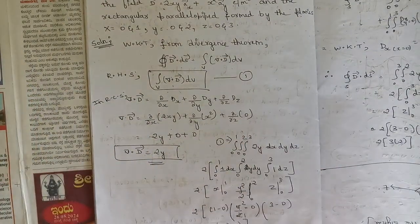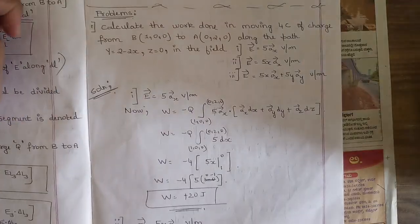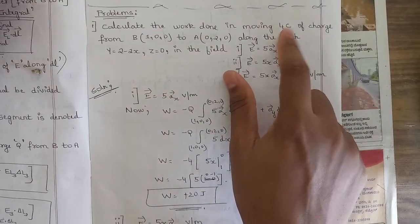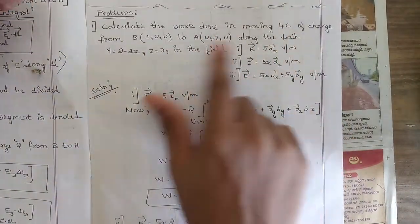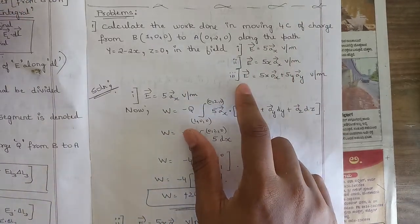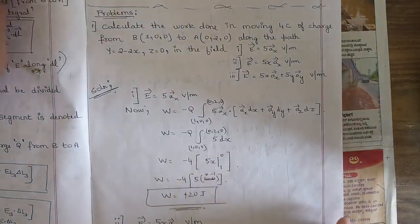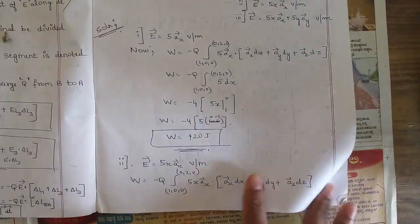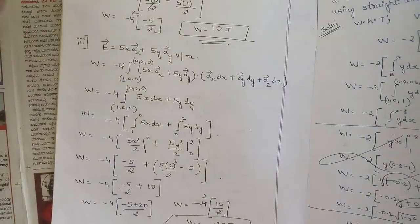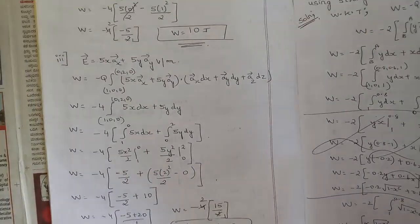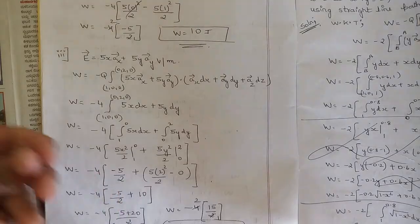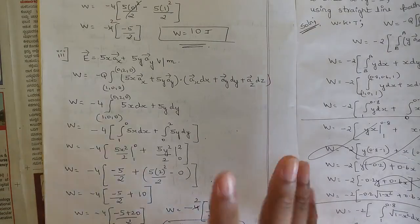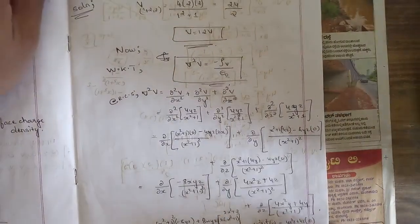One problem related to work done is also important from module 2 — to calculate the work done in moving a certain amount of charge from an initial to a final position along given paths. The electric field values would be given as sub-questions and using the formula for work done we need to find the required values. A similar problem has been solved in our concept playlist.